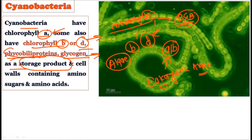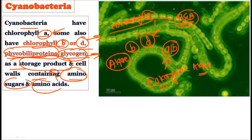Additionally, there are storage products like phycobiliproteins and glycogen. The cell walls contain amino sugars and amino acids. So in this point, chlorophyll A makes cyanobacteria more related to algae, showing more correlations.